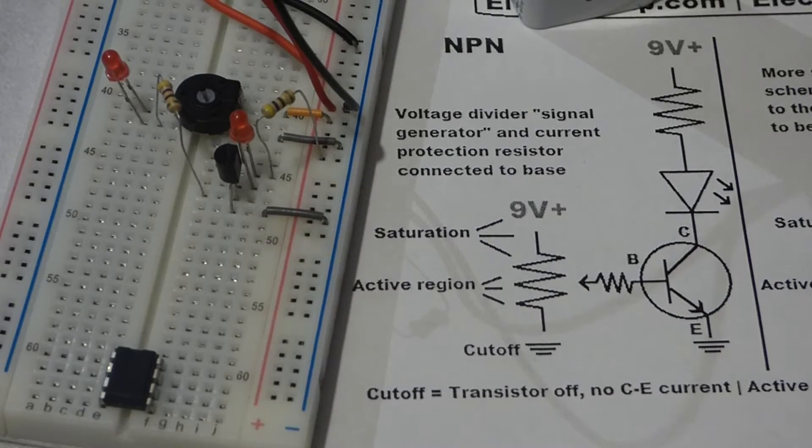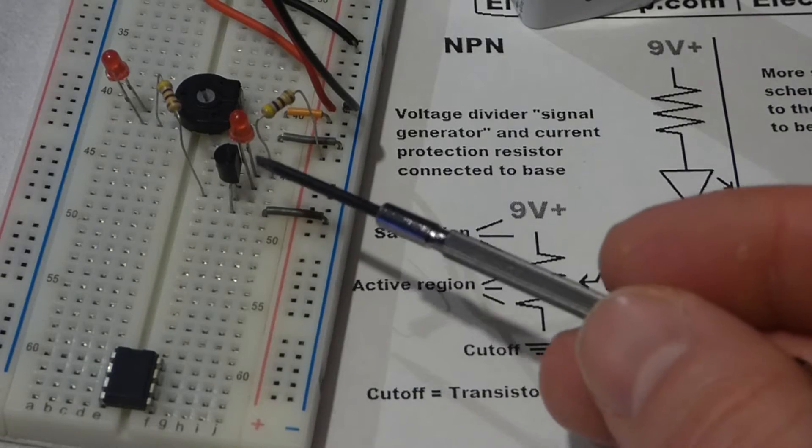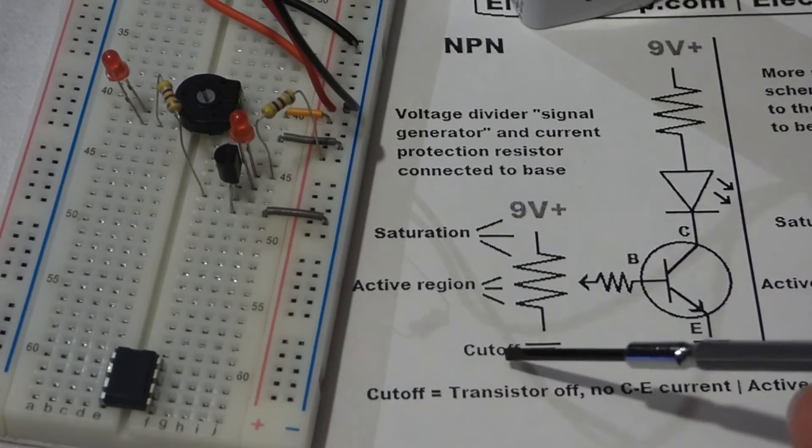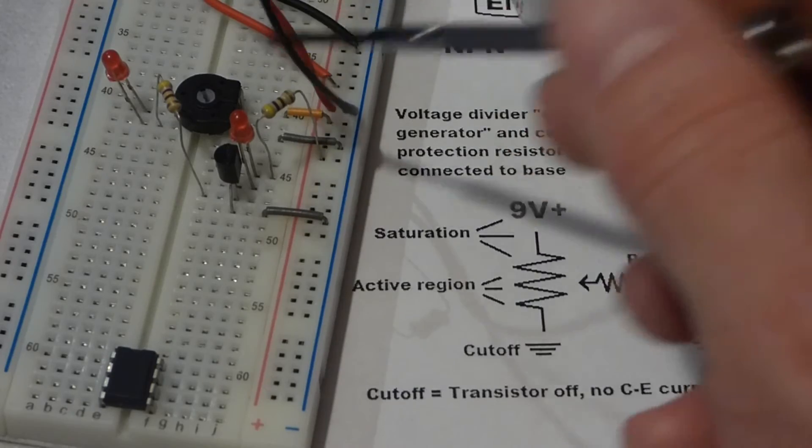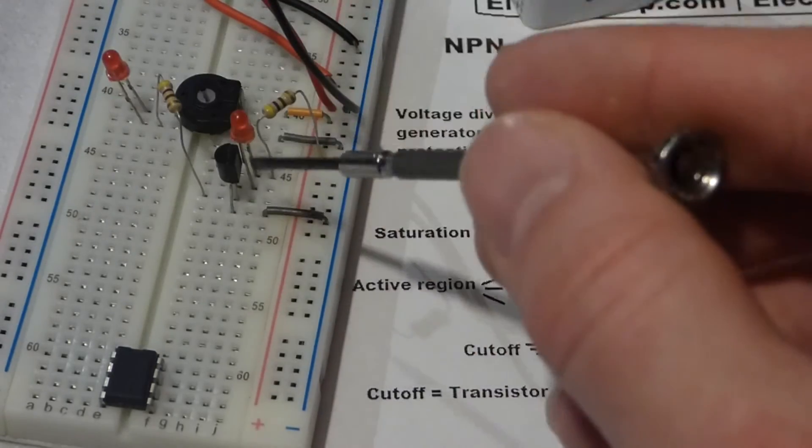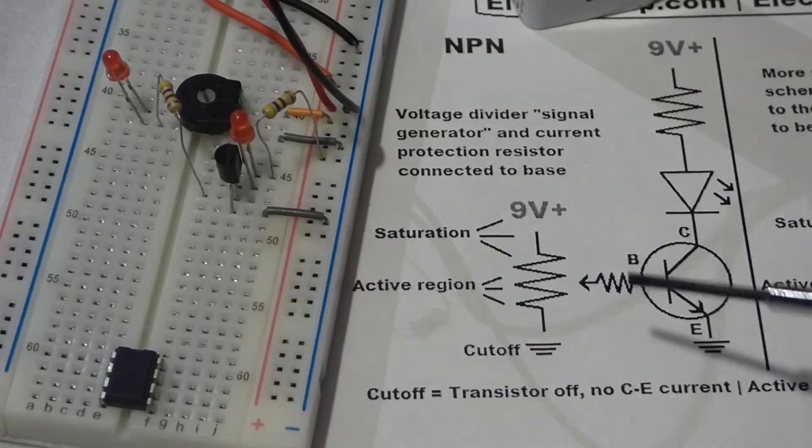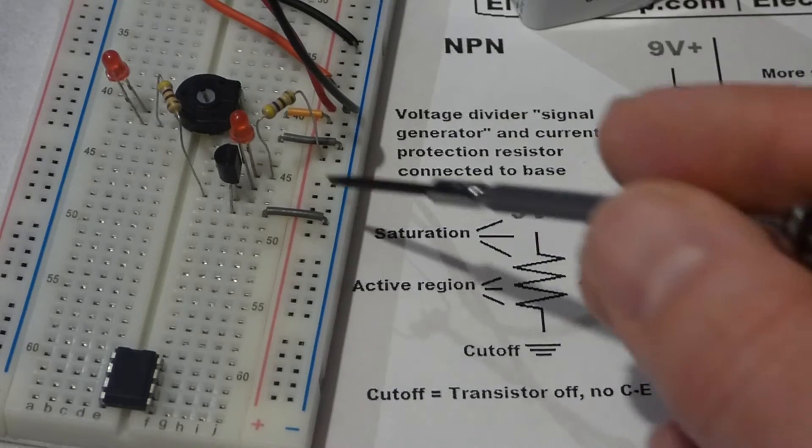Right now I have this trim pot here which I'm using to send a signal to the base of the transistor. The trim pot is set down to zero volts, connected to this negative power rail, and the emitter also comes to the negative power rail.